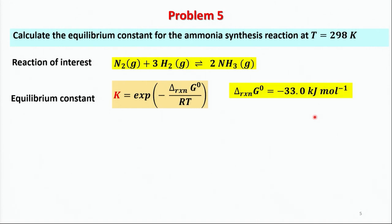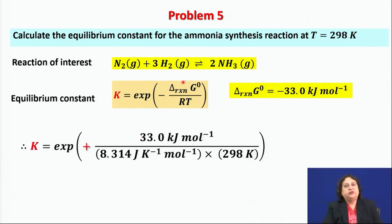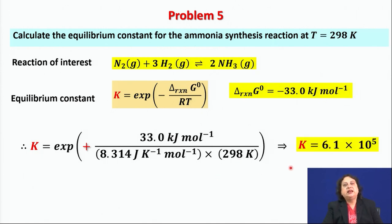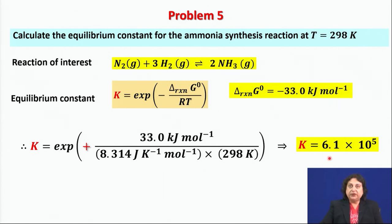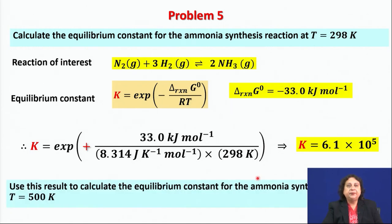Substituting ΔG°rxn = −33.0 kJ/mol, the universal gas constant R, and T = 298 K, we get K = 6.1 × 10⁵. That is a pretty high yield — the concentration of ammonia formed is 6.1 × 10⁵ times the product of the reactant concentrations.